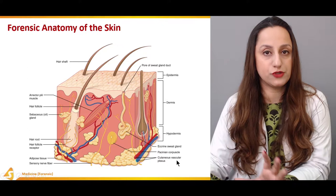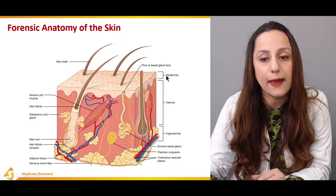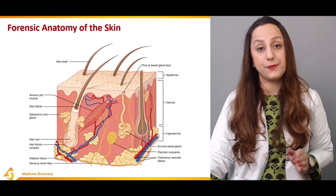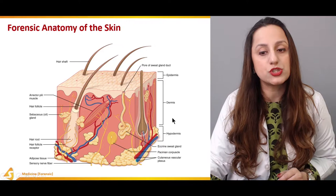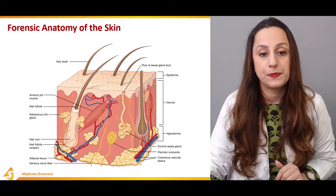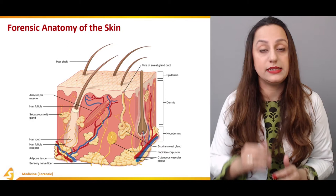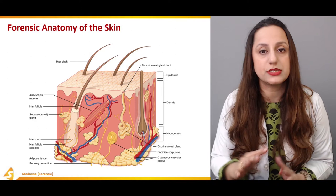One important thing to note, which we will discuss in later slides, is that the epidermis doesn't contain any blood vessels. So any injury involving the epidermis will not bleed. The injuries which involve the dermis and the hypodermis are the injuries that will bleed. This is the rough anatomy of the skin — the key significance is that the epidermis doesn't bleed, while injuries to the dermis and hypodermis do bleed.